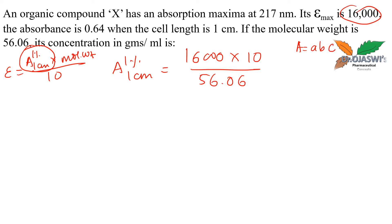I cannot substitute 16,000 directly in A equals abc, because if I substitute molar absorptivity there, the concentration will be in moles per liter. The question asks for concentration in grams per ml. I could convert at the end, but I'm finding a1% 1cm first, which is the specific absorbance I'll substitute.